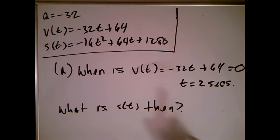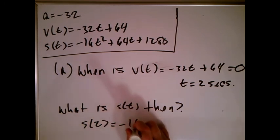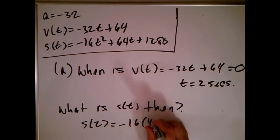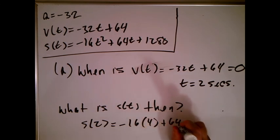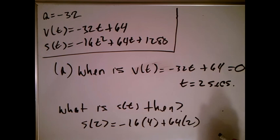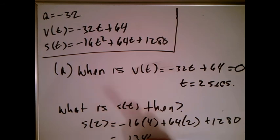Now they're asking, what is s(t) then? Well, t is now 2, so they're really asking what s(2) is. And that's going to be minus 16 times 4, that's 64, plus 64 times 2, that's 2 times 64, plus 1280. That's minus 64, plus 2 times 64, that's 64. I'm going to get 1344 feet.